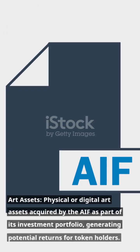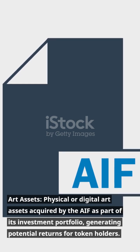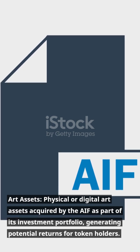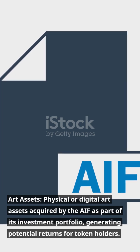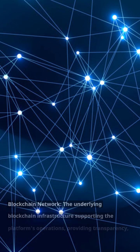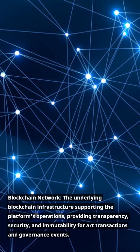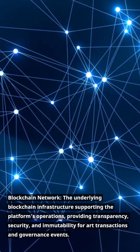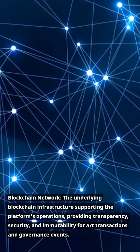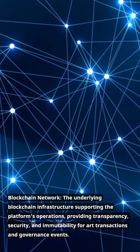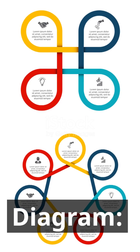Art Assets: Physical or digital art assets acquired by the AIF as part of its investment portfolio, generating potential returns for token holders. Blockchain Network: The underlying blockchain infrastructure supporting the platform's operations, providing transparency, security, and immutability for art transactions and governance events.